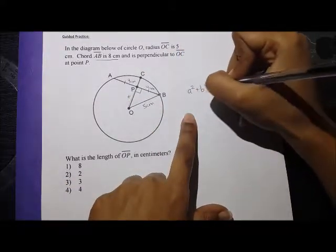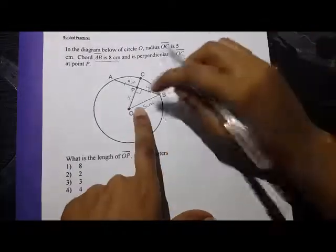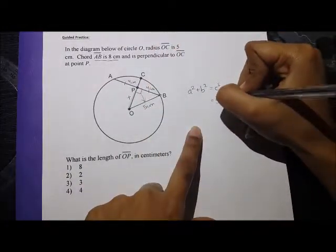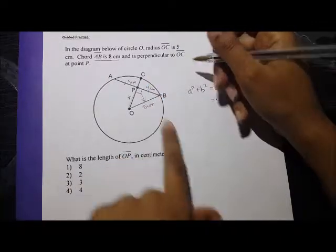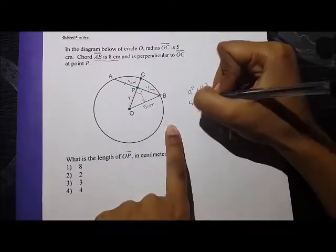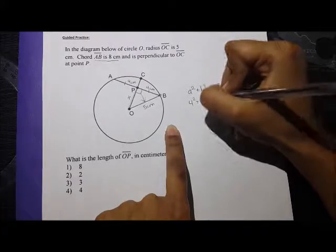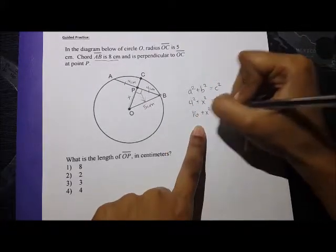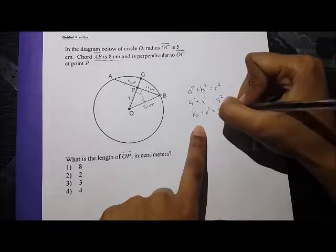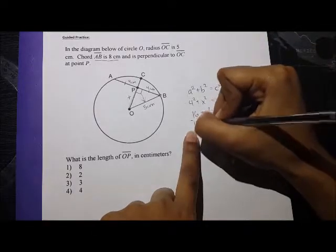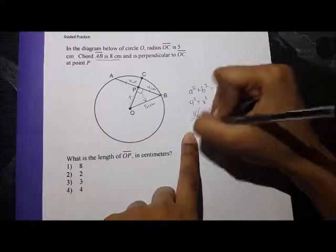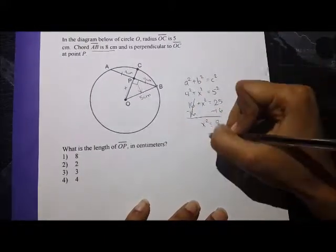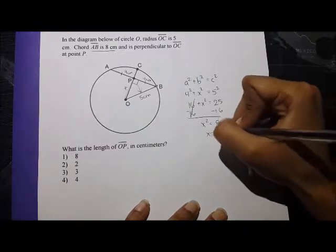So A squared plus B squared equals C squared. My hypotenuse is 5 centimeters, so that's going to be 5 squared. One of my legs is going to be 4 centimeters, and my X is going to be that B squared. So I have 16 plus X squared equals 25, minus 16 on both sides. And X squared equals 9, so X equals 3.